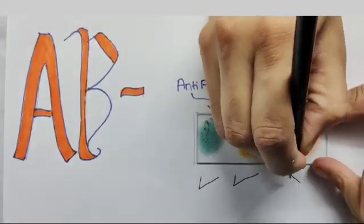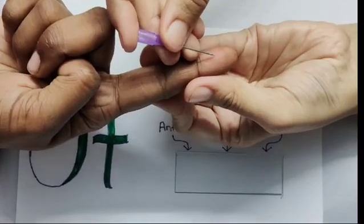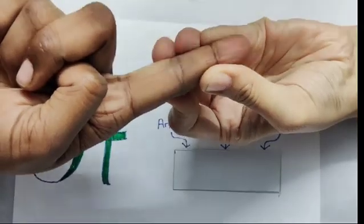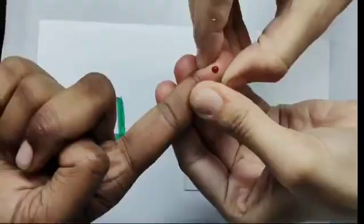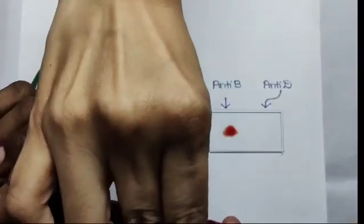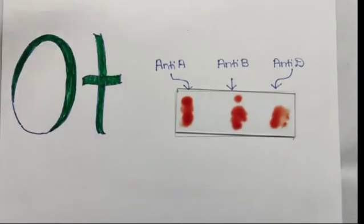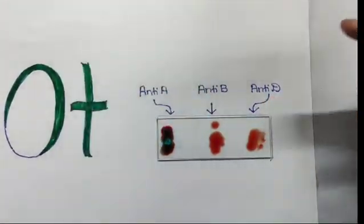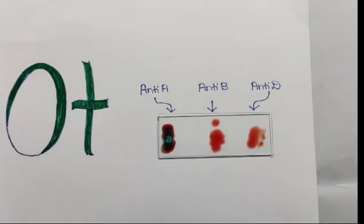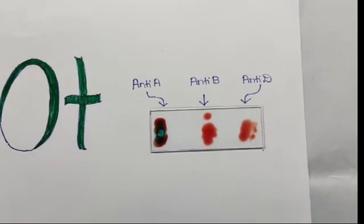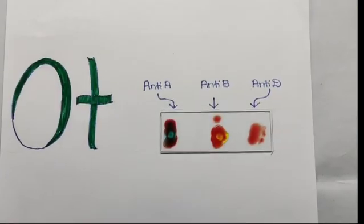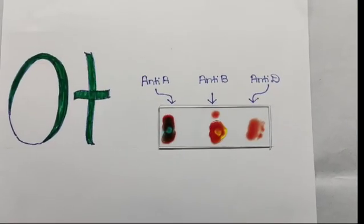Do the same for O positive blood group. Here, no clotting is seen in anti-A and anti-B, which means both antigen A and antigen B are absent. Hence, it is O blood group.